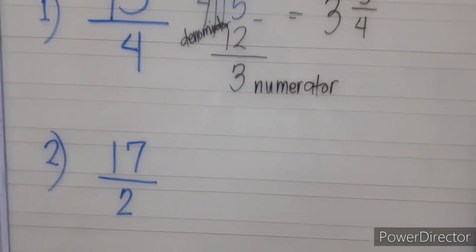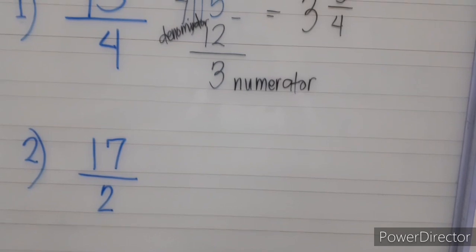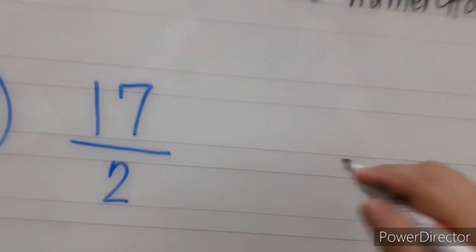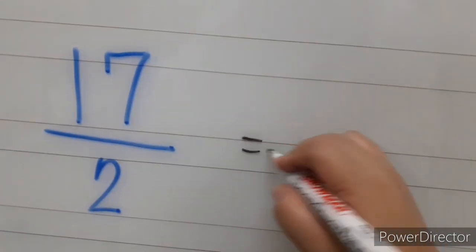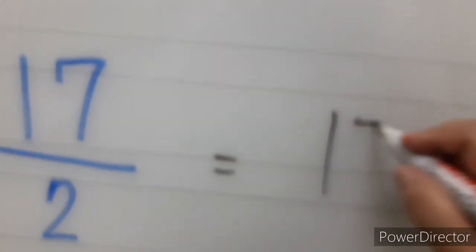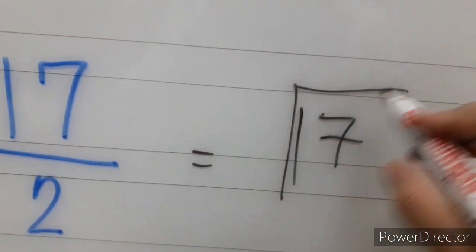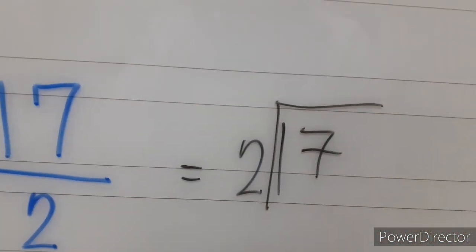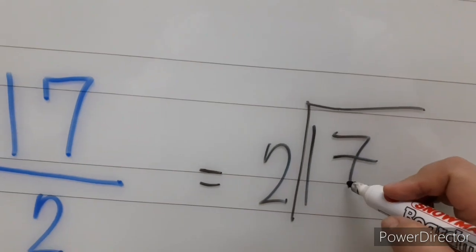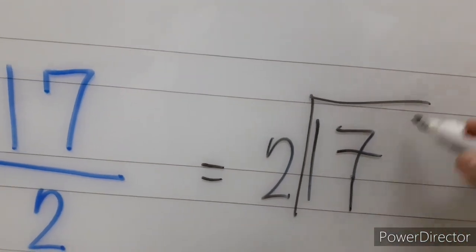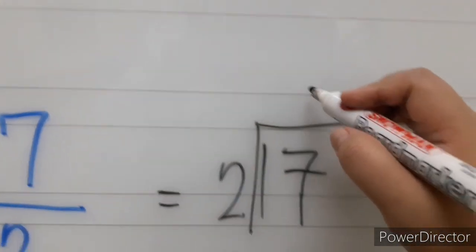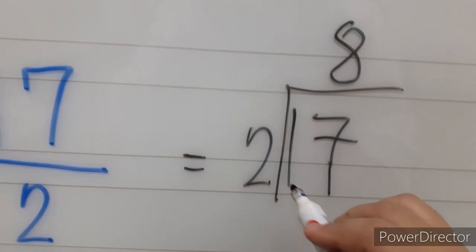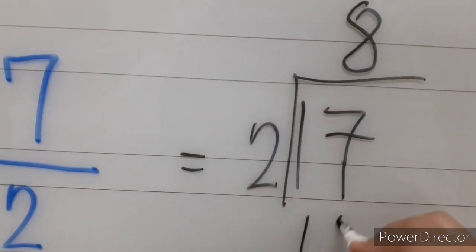We have 17 over 2. We are going to follow the same procedure. We simply have to divide 17 by 2. 17 divided by 2, we have 8. Then multiply 8 times 2, equals 16.